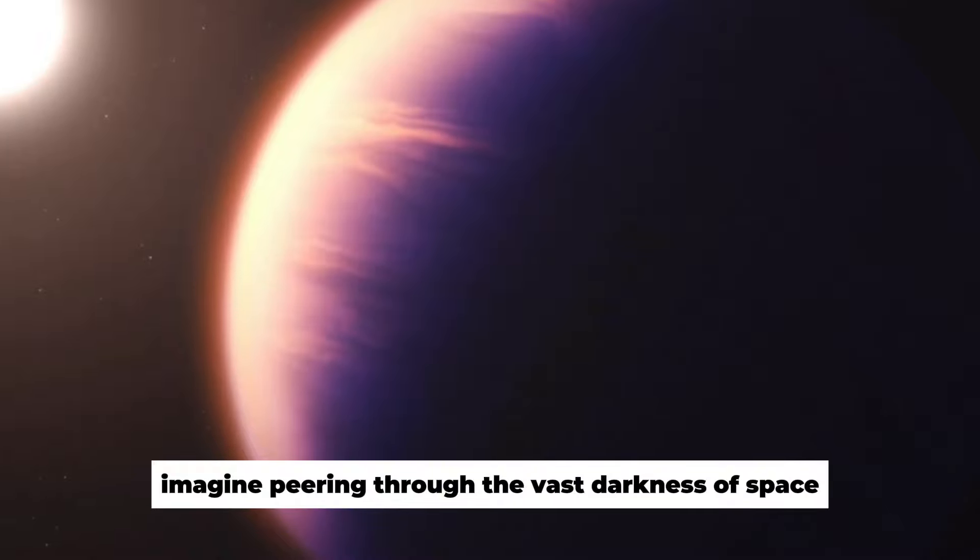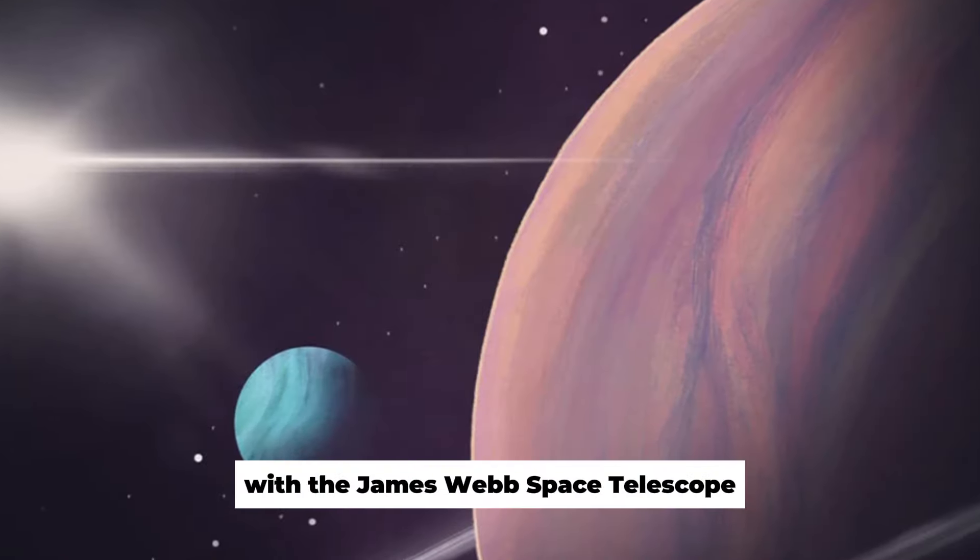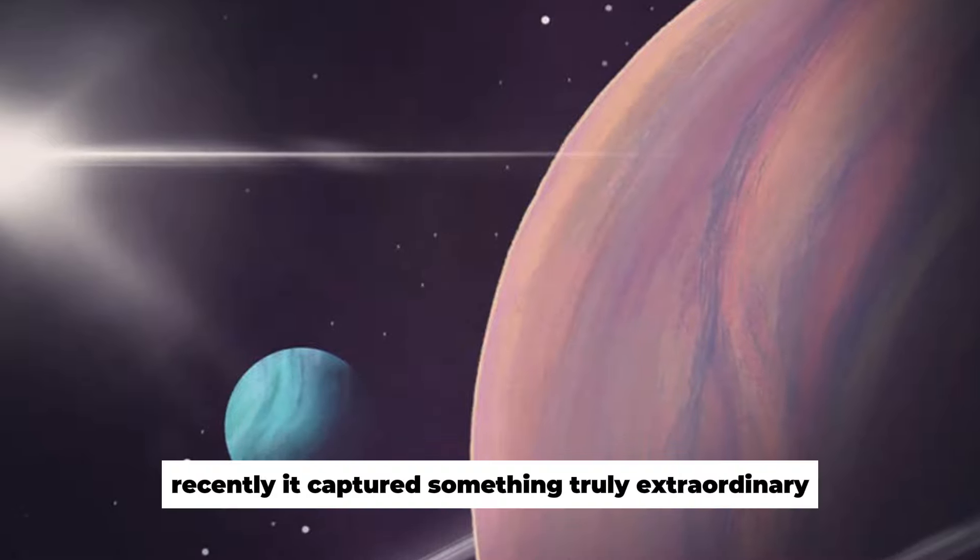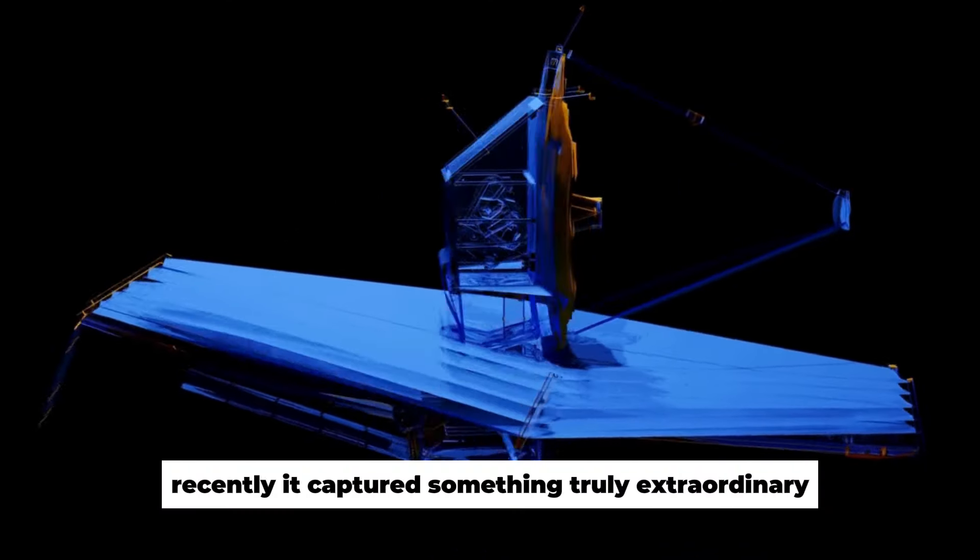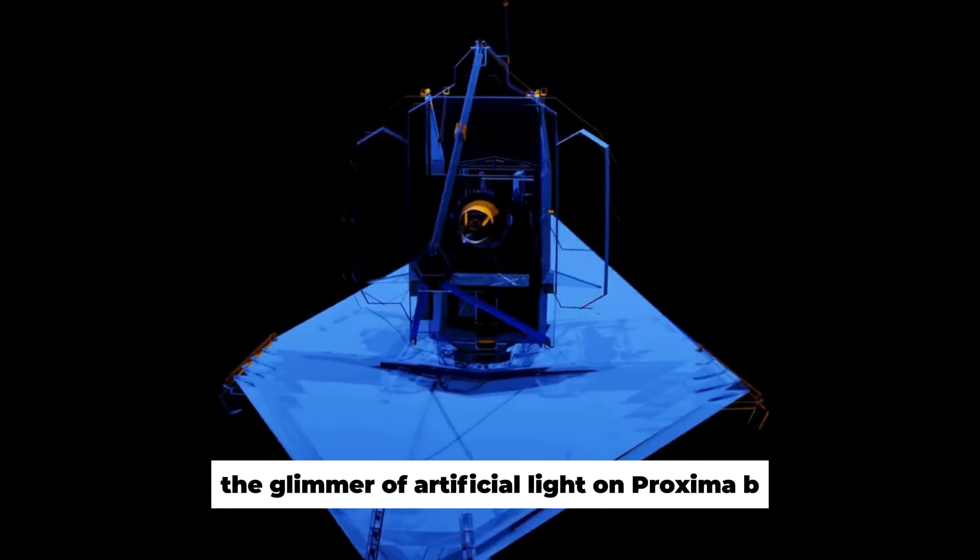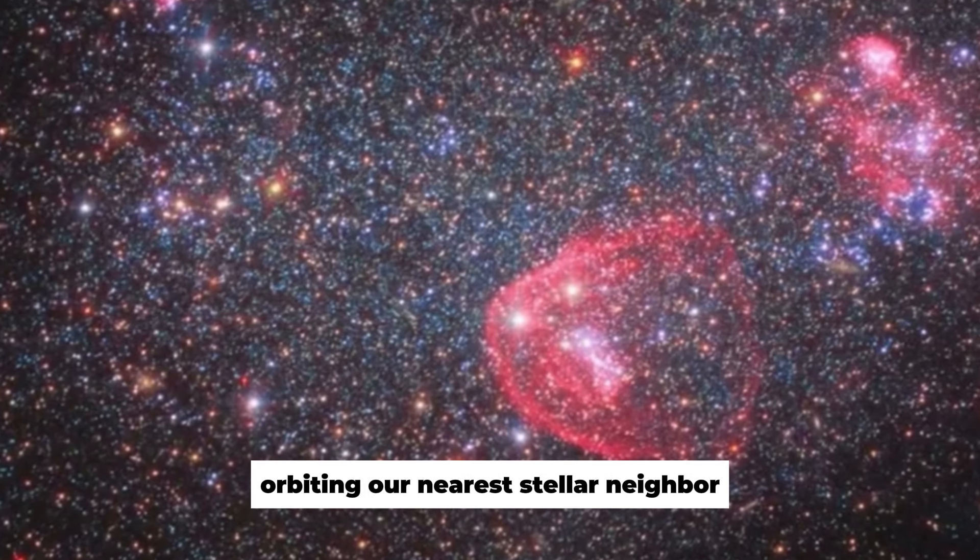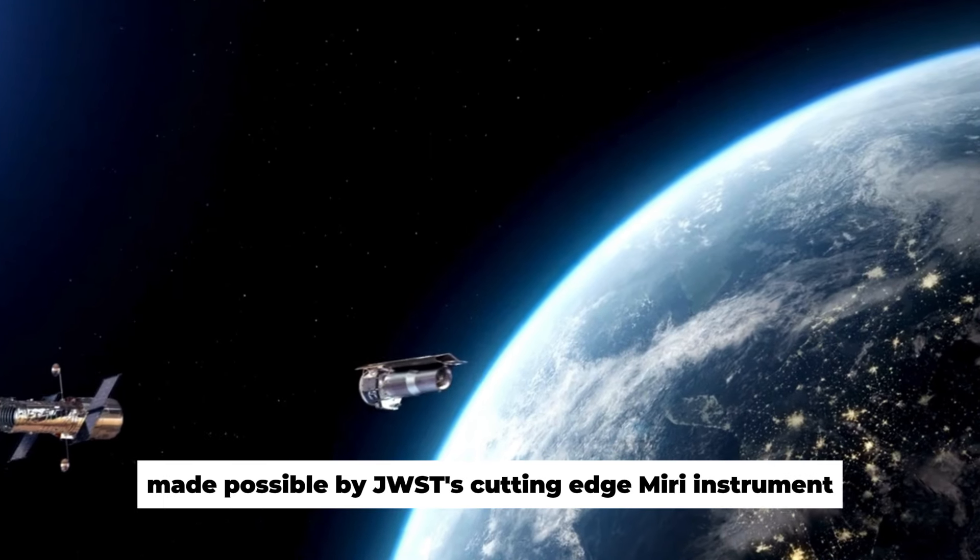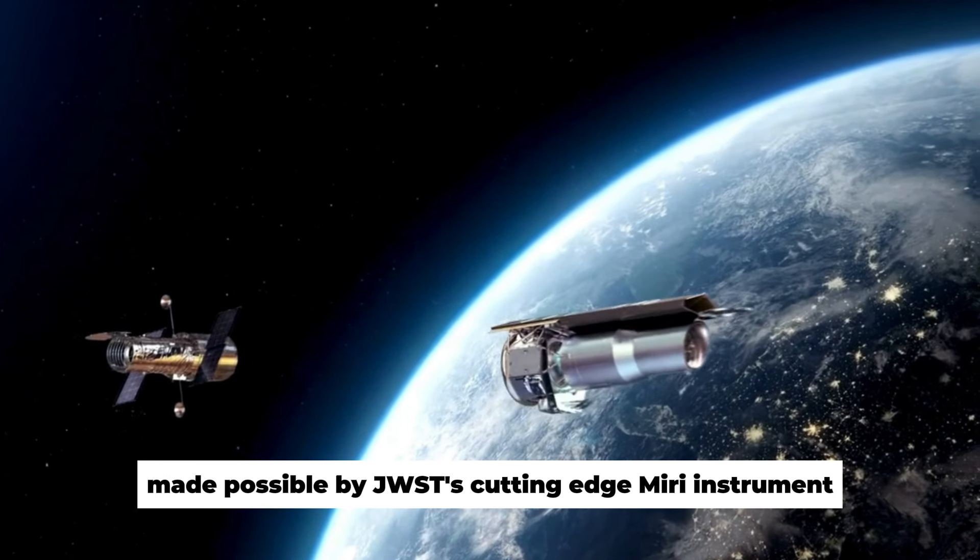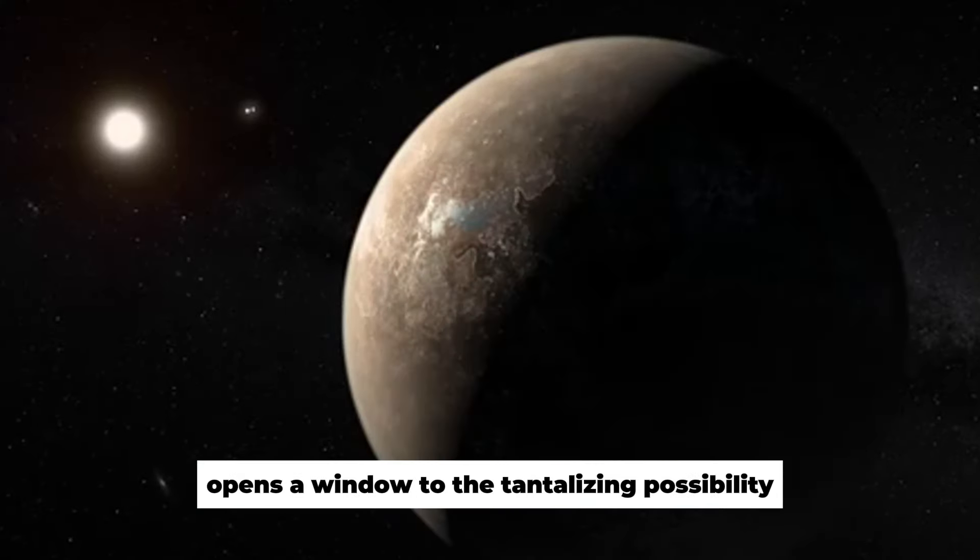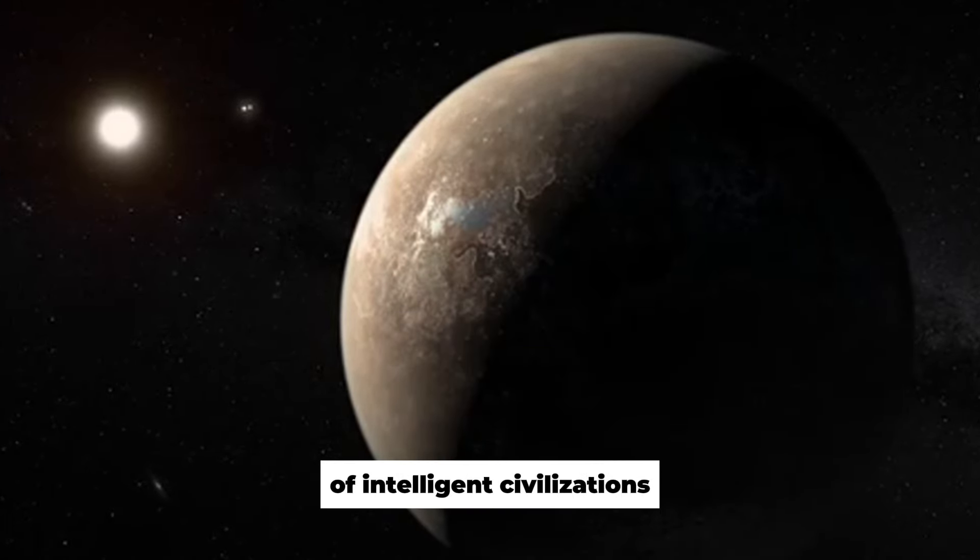Imagine peering through the vast darkness of space with the James Webb Space Telescope, a marvel of modern astronomy. Recently, it captured something truly extraordinary, the glimmer of artificial light on Proxima b, a distant exoplanet orbiting our nearest stellar neighbor, Proxima Centauri. This discovery, made possible by JWST's cutting-edge MIRI instrument, opens a window to the tantalizing possibility of intelligent civilizations beyond Earth.